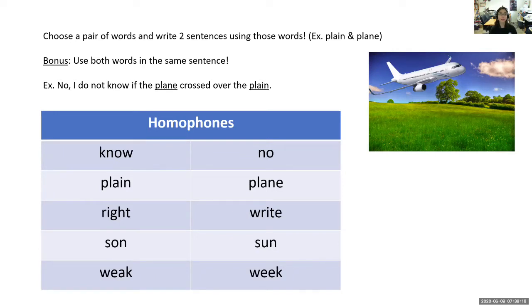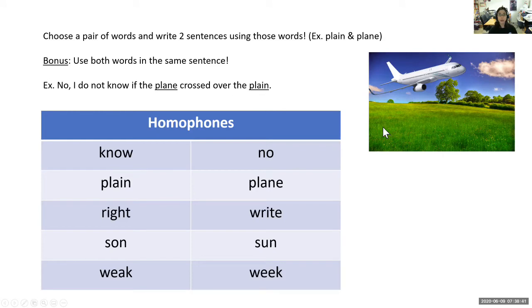Our next task is very similar but uses different pairs of homophones. The instructions are to choose a pair of words and write two sentences. For example, plane and plain — 'I do not know if the plane crossed over the plain.' For a bonus, yes, you can use both words in the same sentence.